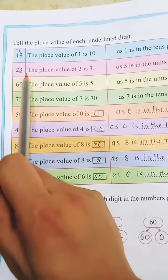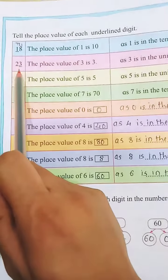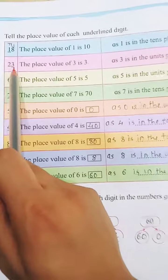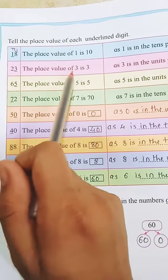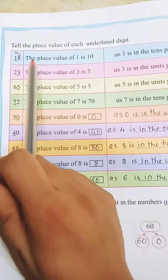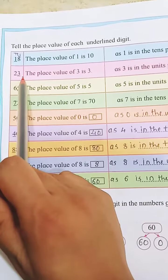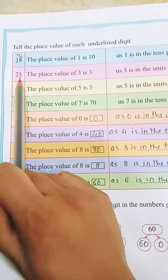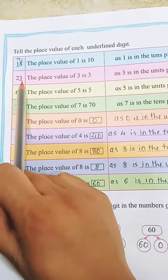That is 23. Now, the underline is at the 3. The place value of 3 is 3 because 3 is at unit's place. 2 is at 10's place. So whatever is at unit's place, we write as it is.